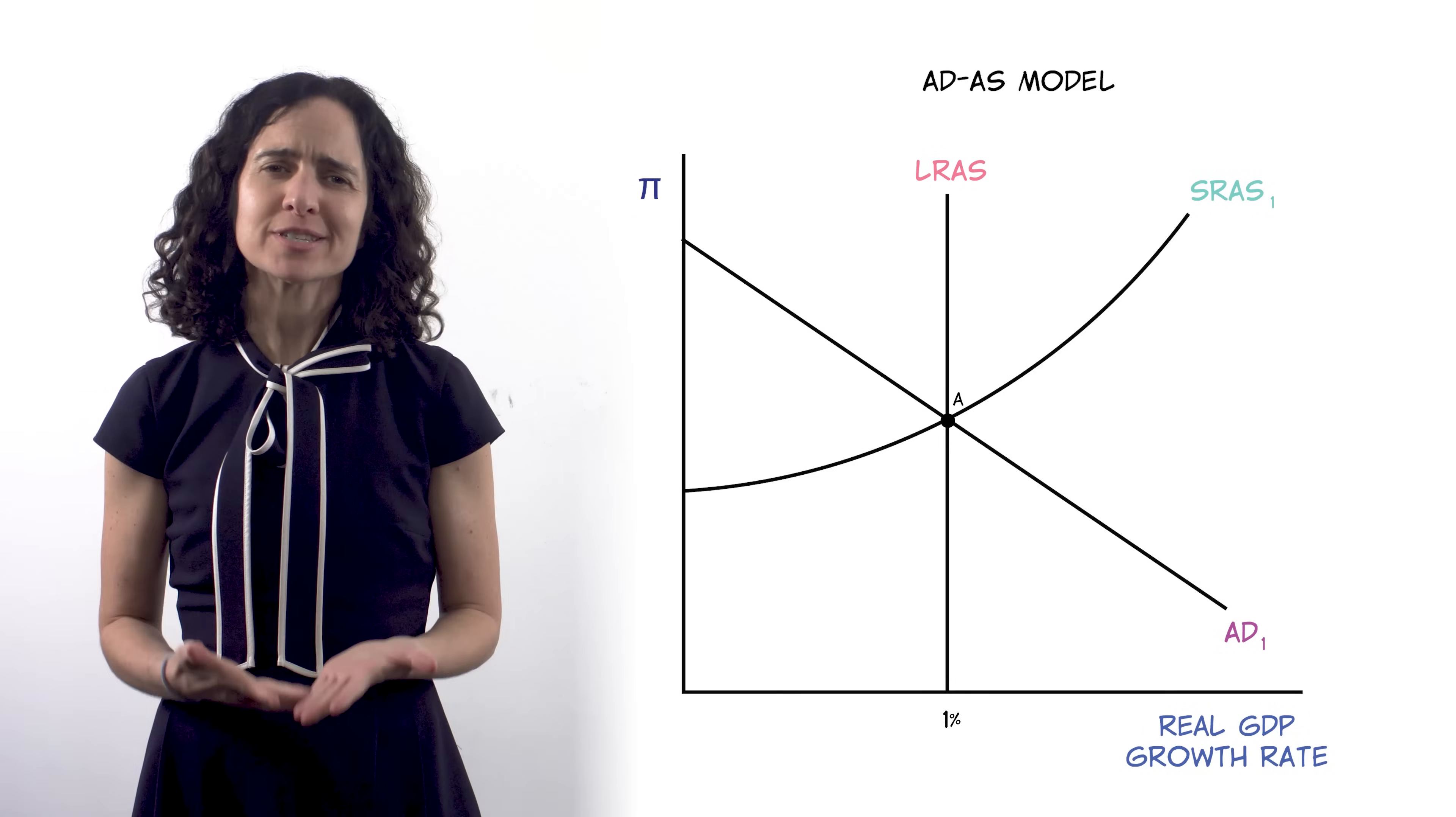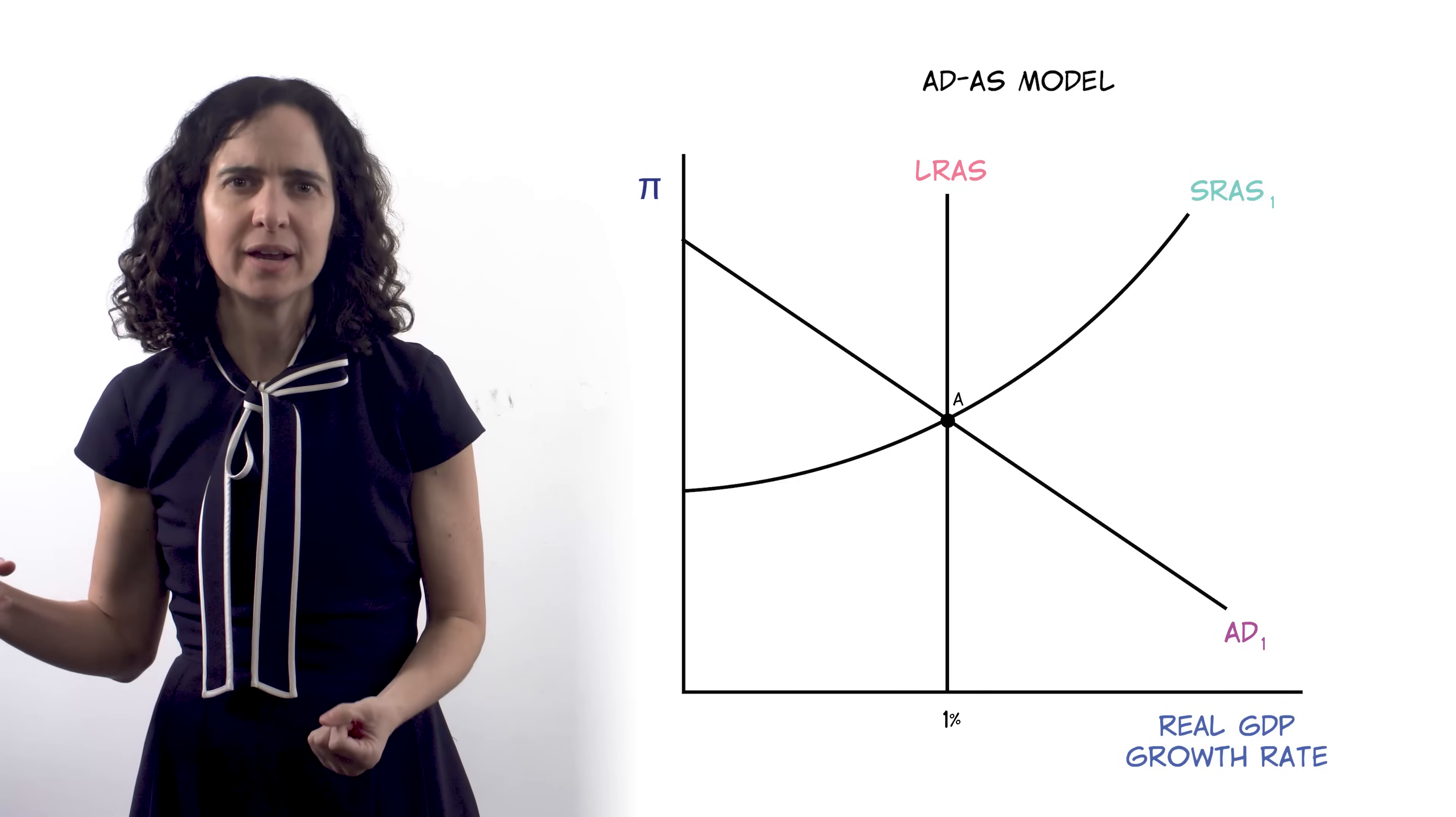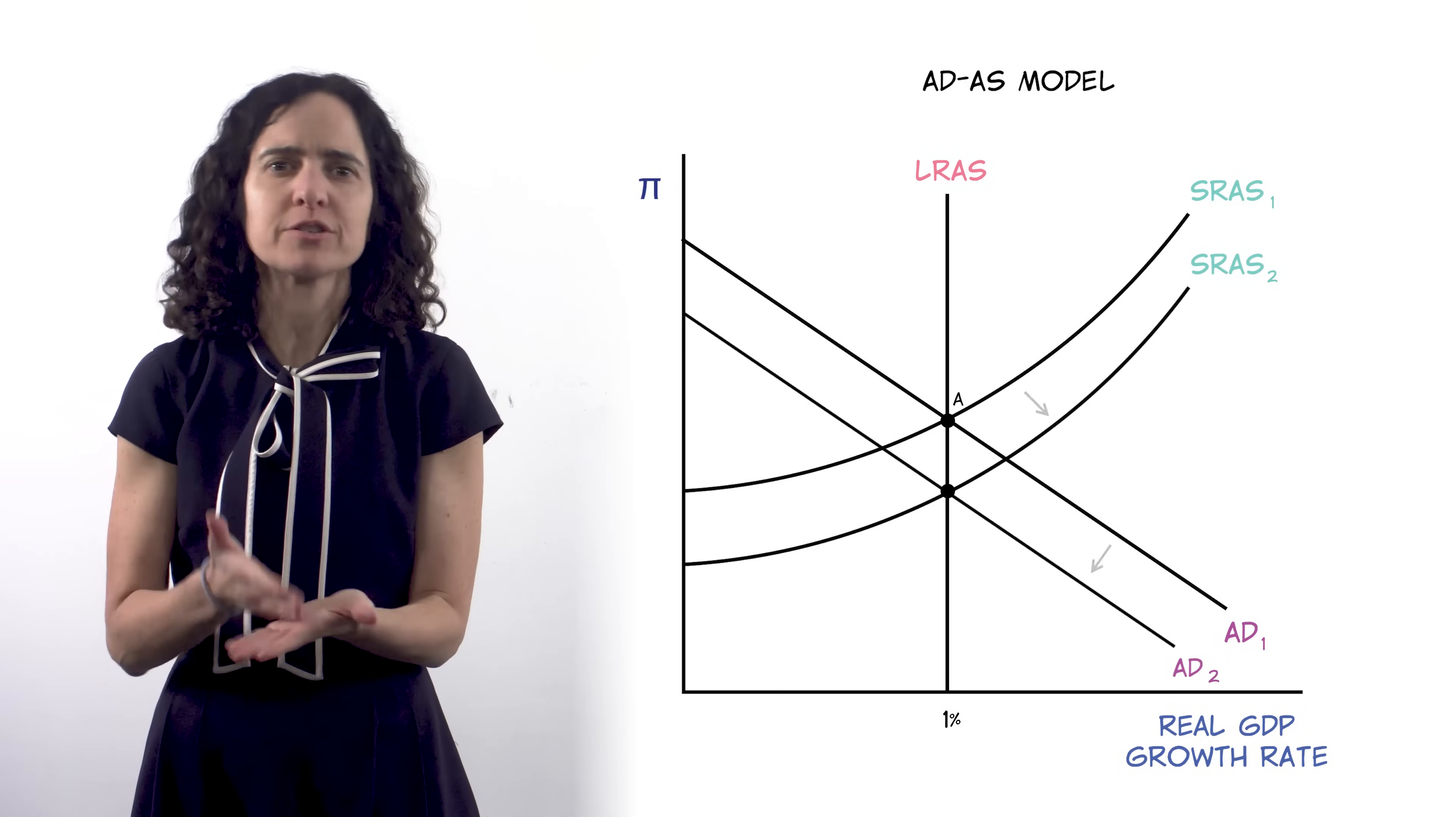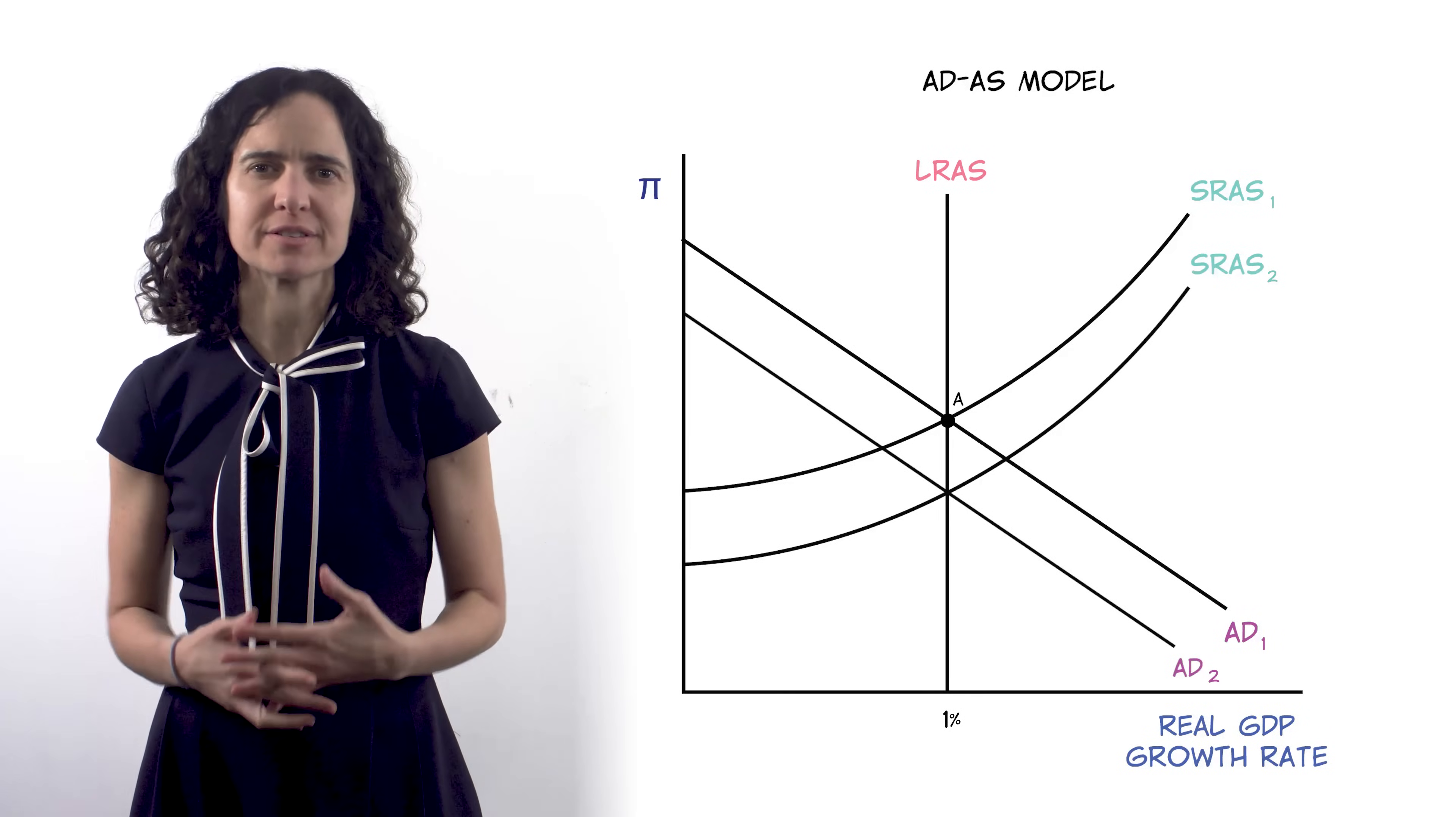For example, the Great Recession was in part caused when housing prices fell dramatically, causing people to cut back on their spending, a fall in the growth rate of V. Now, the model tells us what to expect when V falls. But it takes time to figure out that that was actually going on in 2008 and 2009.